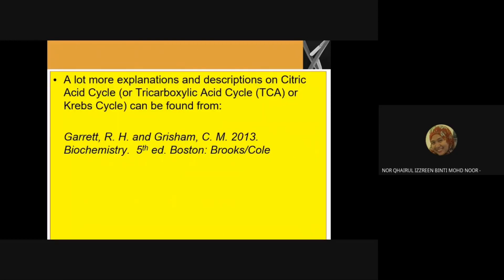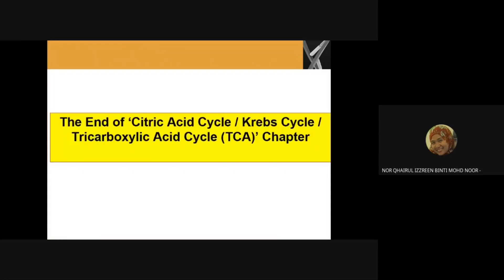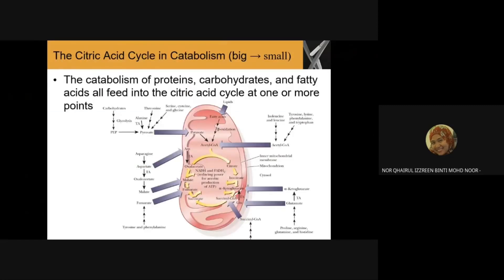You can find more explanation on the TCA cycle in biochemistry textbooks such as Garrett and Grisham, though any biochemistry book can be referred to. With that, we end the TCA cycle section. The role of the citric acid cycle in catabolism — remember that catabolism is from big molecule to small molecule. The catabolism of proteins, carbohydrates, and fatty acids all feeds into the citric acid cycle at one or more points.